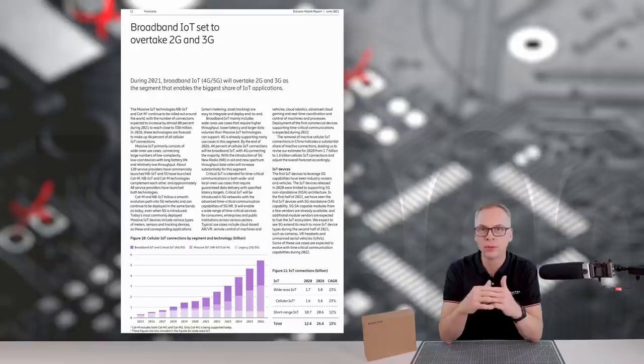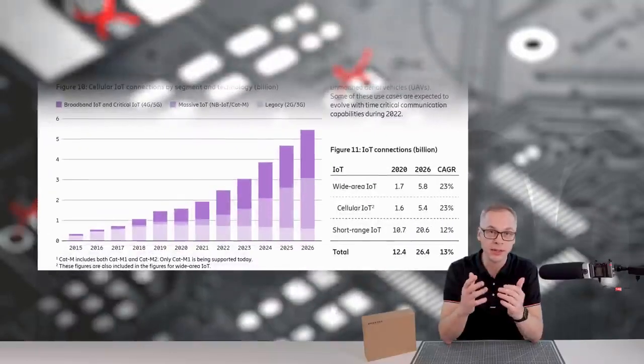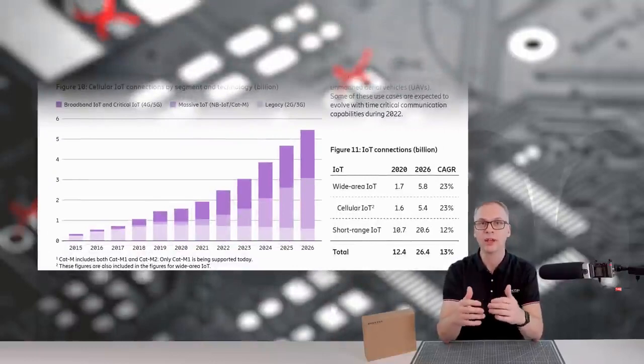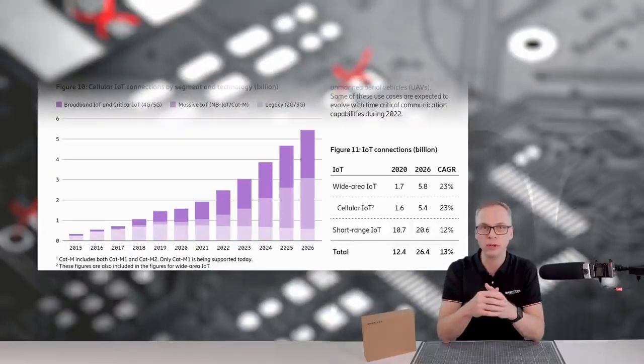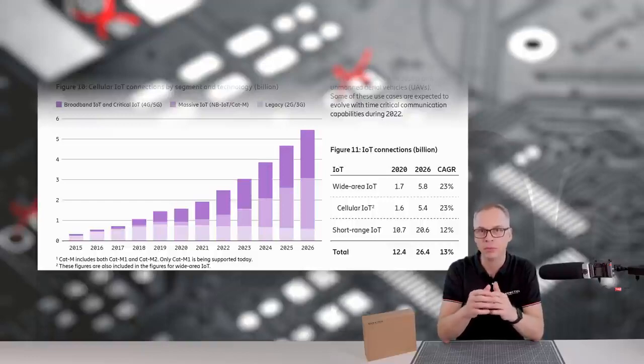That's why more and more operators all around the world support it. As of January 2022, there were already 108 operators with rolled-out NB-IoT networks, with 164 existing mobile networks in total according to GSMA. And take a look at the cellular IoT connection number forecast. Here we have June 2021 Ericsson Mobile Report data. In the next five years, the number of connections is going to increase from around 2.5 billion to approximately 5.4 billion. The segment of NB-IoT and CAT-M, which is the massive IoT technologies, is expected to be almost half of this number. And that's a huge number indeed.